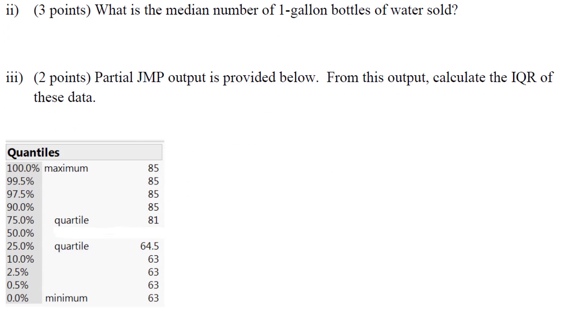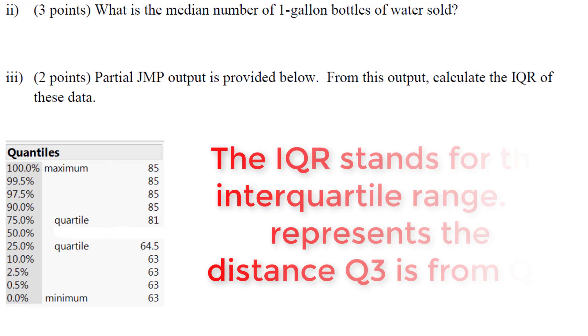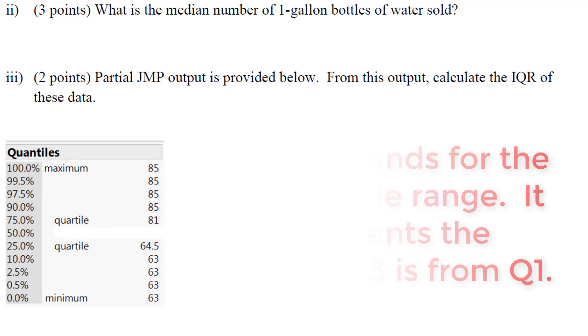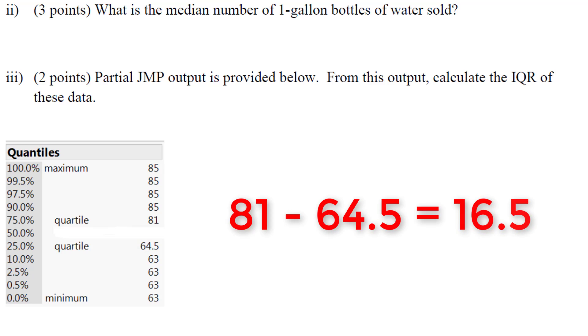Finally we have some JMP output, which has us calculating the IQR. To calculate the IQR, the formula is simply Q3 minus Q1. Q3 is the 75th percentile, and Q1 is the 25th percentile. With this in mind, when we take 81 minus 64.5, we get 16.5.